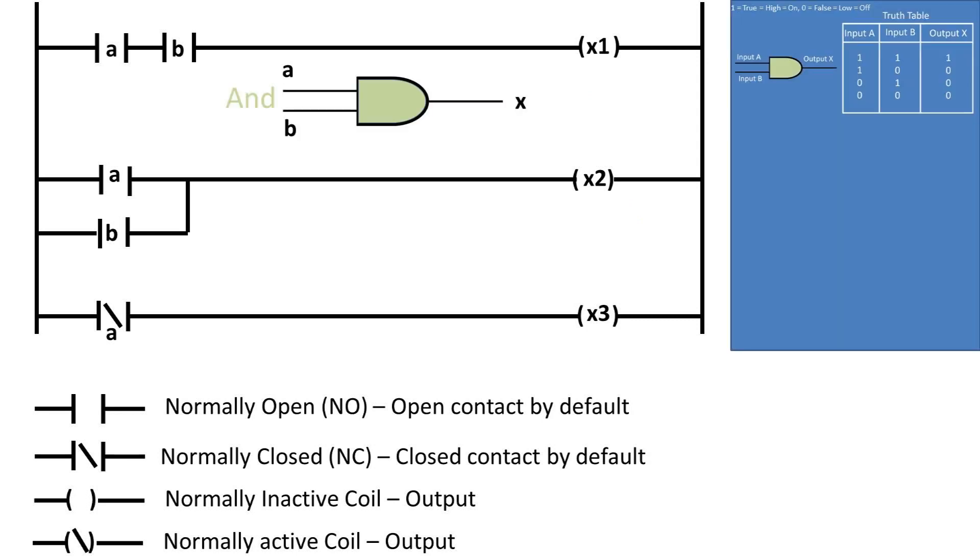Now, if the two contacts are in series, this is equivalent to an AND gate. So the first rung is contact a and B. The truth table is listed to the right. If both contacts are activated, then the coil will also activate.